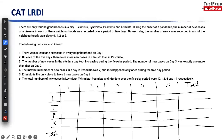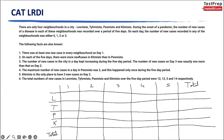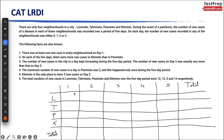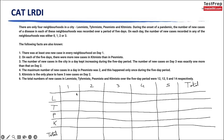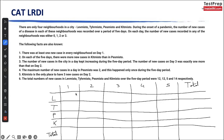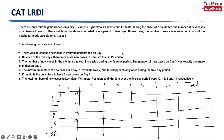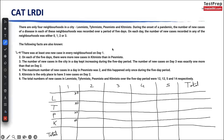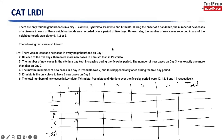There was at least one new case in every neighbourhood on day one. So what value can't we have on day one? None of the neighbourhoods can be 0 on day one. CAT LRDI is about understanding the hidden meaning in these statements — once you start doing that, LRDI becomes much simpler.